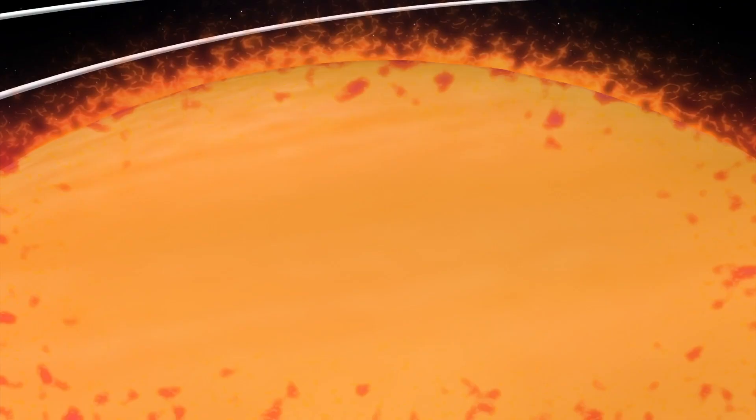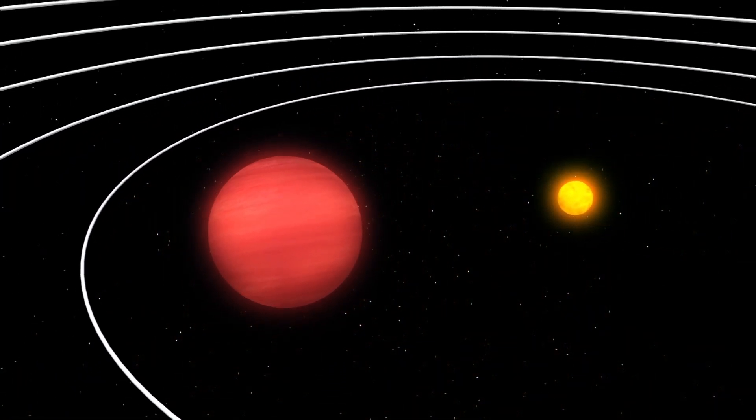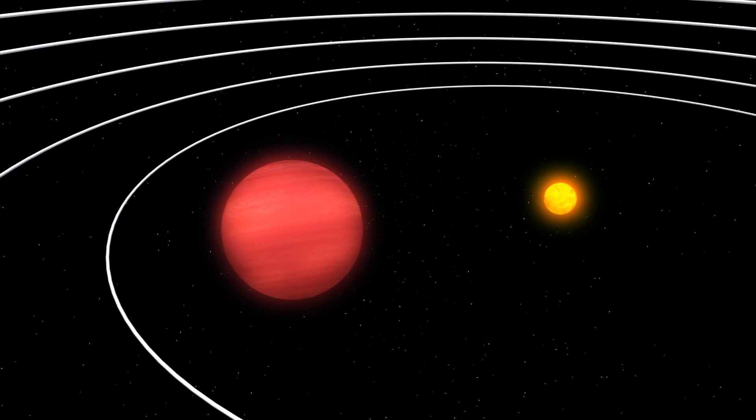The surface temperature of the planet is approximately 600 degrees Celsius, which makes it virtually uninhabitable. It is seven times closer to its sun-like star in comparison to Earth and its sun.